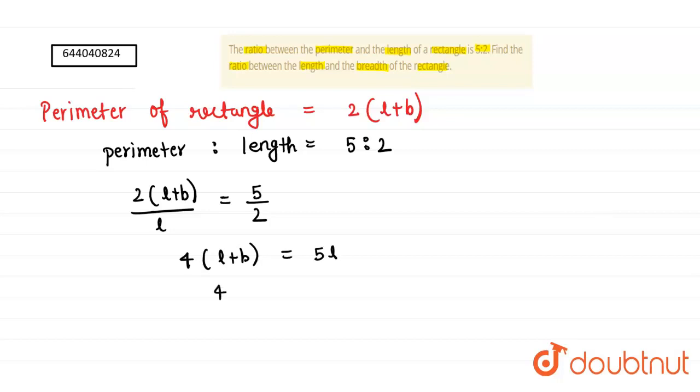4l + 4b = 5l, so 4b = l. Now what we have to find is the ratio between length and the breadth of the rectangle.